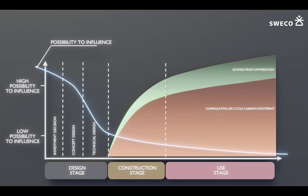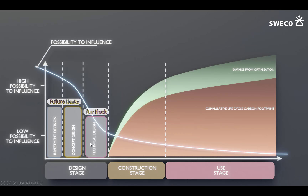In this hackathon we did just that. We used different types of technologies that we had available to us and built a system that could try to solve the use case we wanted to solve. We wanted to try to decrease the carbon footprint in the full life cycle of the project, focusing on the first design stages where you can actually have a bigger impact. In this hackathon we focused on the technical design side, and in future hacks we can focus on the concept design and investment decision phases, which have a higher possibility to influence.